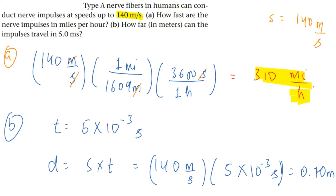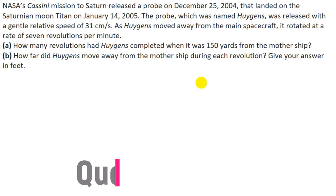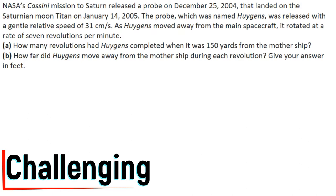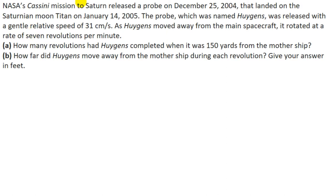This is our next question, and you may find it to be challenging, but after the explanation you will be comfortable with the solution. The question says NASA's Cassini mission to Saturn: the probe named Huygens was released with a relative velocity of 31 centimeters per second, and Huygens moved away from the main spacecraft rotating at a rate of 7 revolutions per minute.